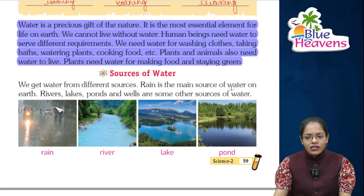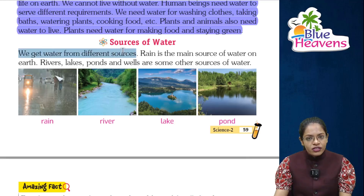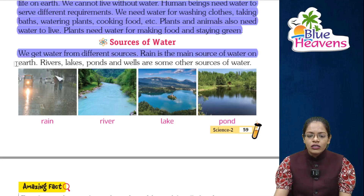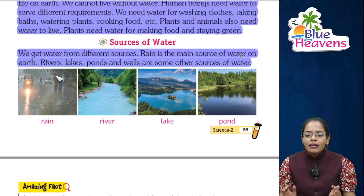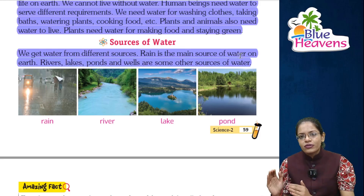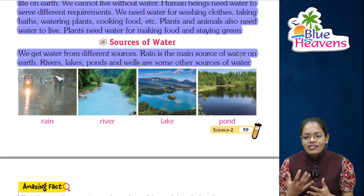Now let's see the sources of water. We get water from different sources. Rain is the main source of water on earth. Rivers, lakes, ponds, and wells are some other sources of water. There are different sources of water from where we can take water.